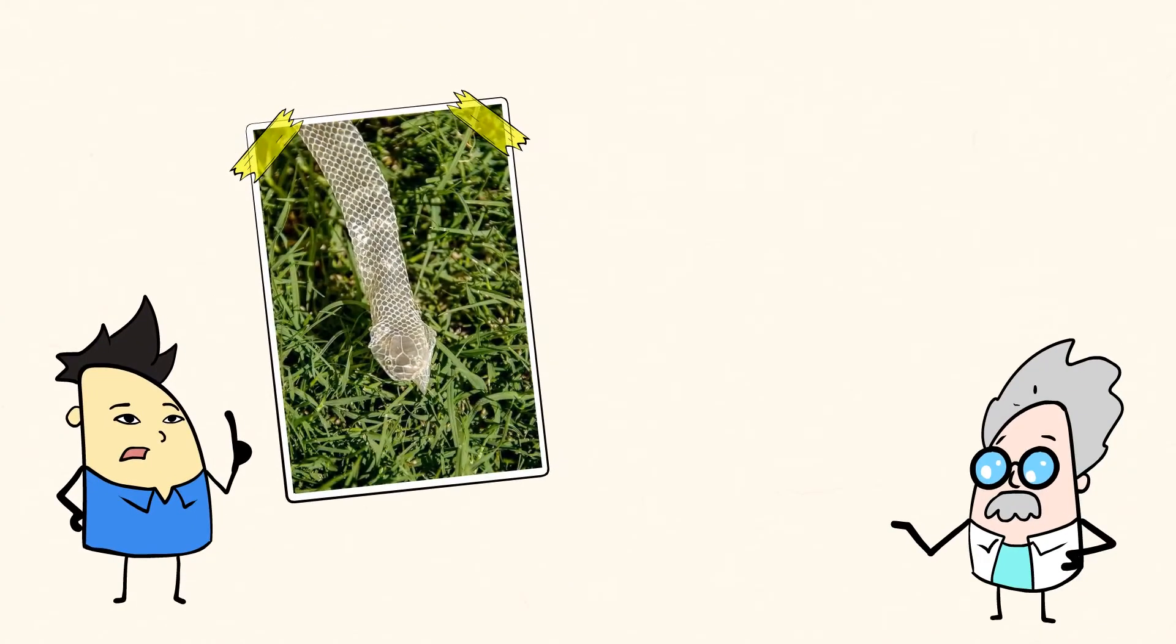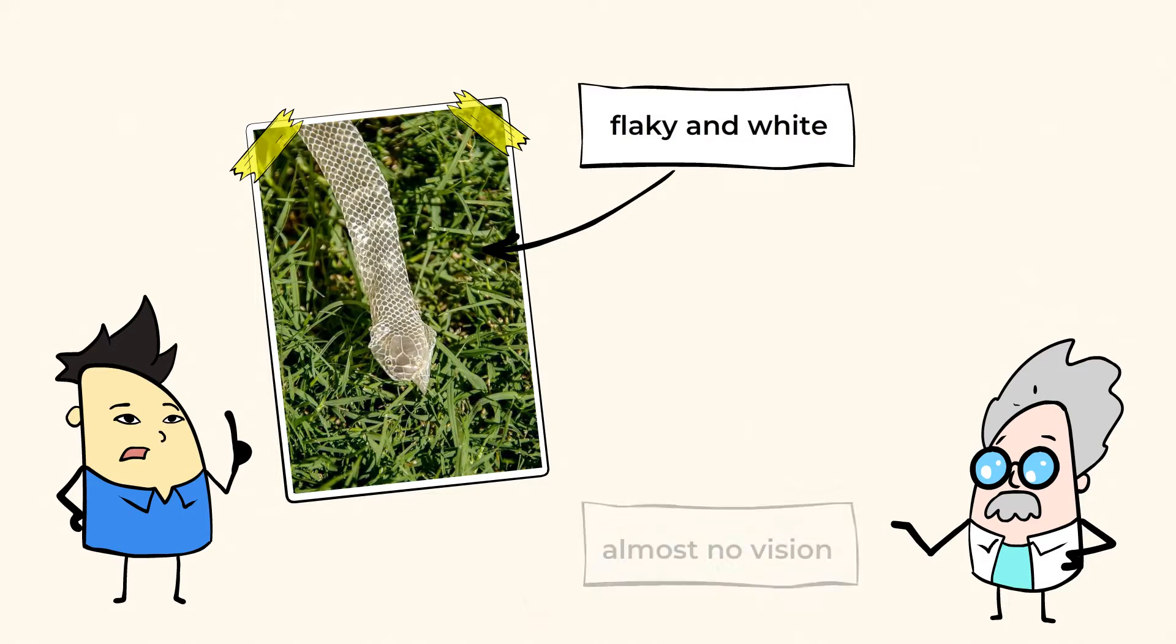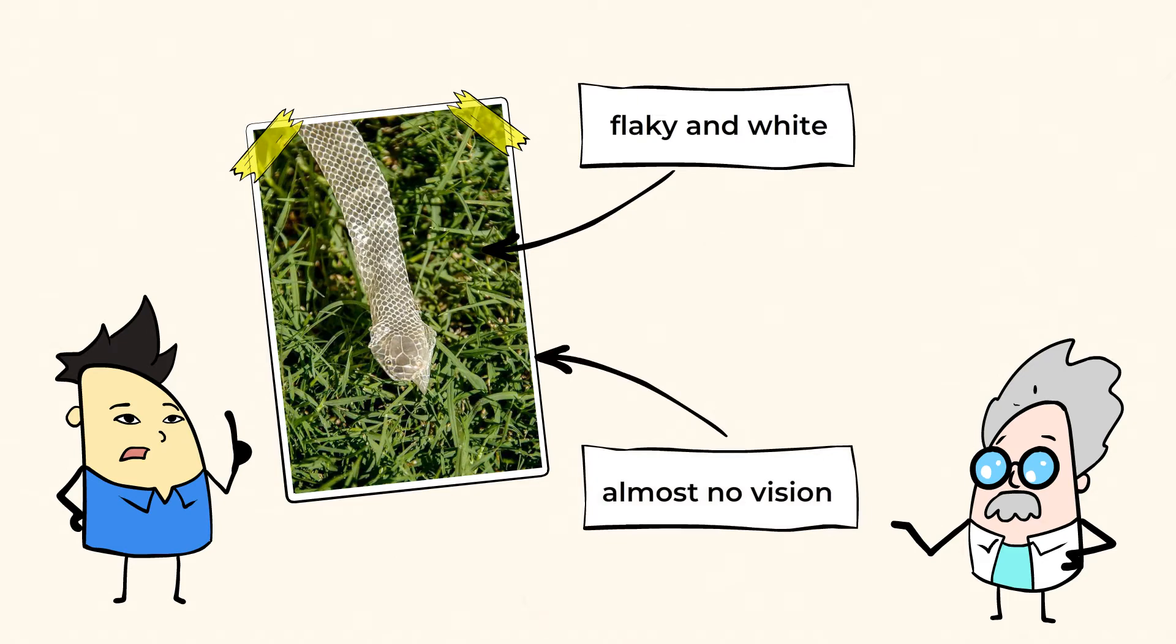Just before a snake sheds, a snake's skin starts to look flaky and white. A snake's eyes are under its skin, and because their skin gets white when they shed, it becomes hard to see through. In fact, it's so hard to see through that snakes may not be able to see at all.